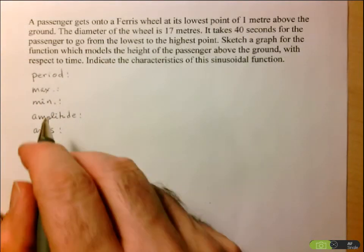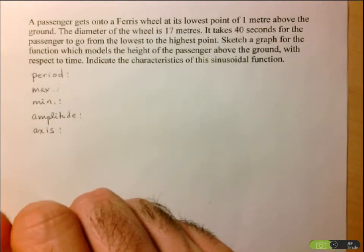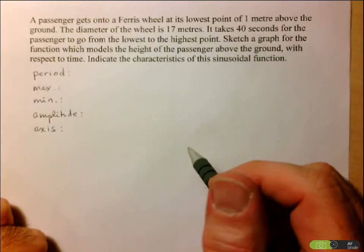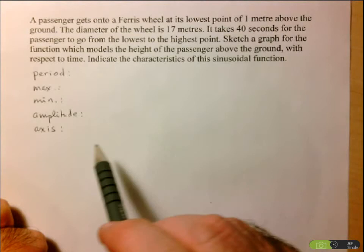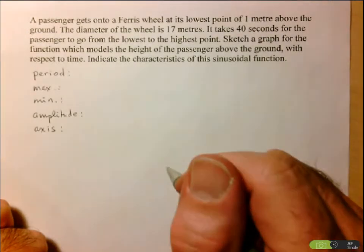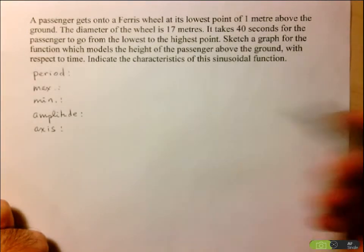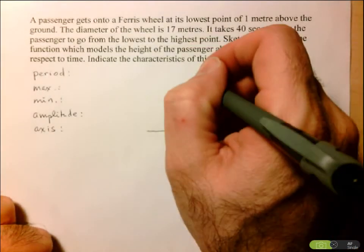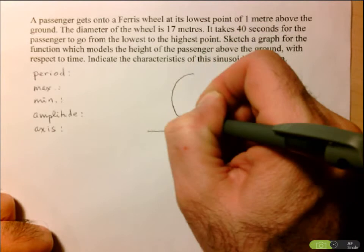These will help us draw a nice graph for this scenario. Another thing that's helpful for determining all this information for a scenario like this is to actually draw a diagram of the situation. So here I've got the ground, and we have a Ferris wheel. So we've got a circle.